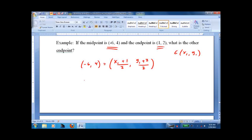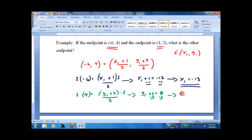So let's write it all out. (−6,4) equals ((x₁ + 1)/2, (y₁ + 2)/2). And break it into two problems because we've just got x and we've just got y. −6 equals (x₁ + 1)/2. Multiply both sides by 2. x₁ + 1 equals −12. Subtract 1. x₁ equals −13.